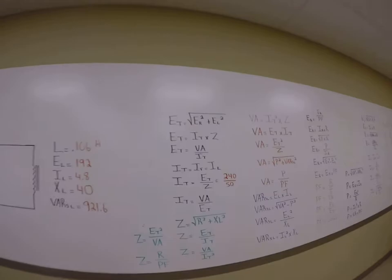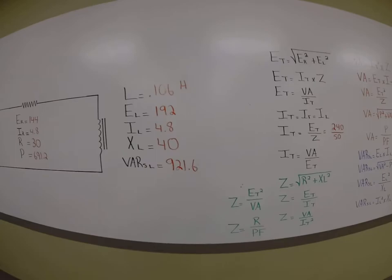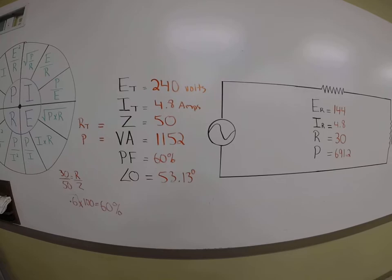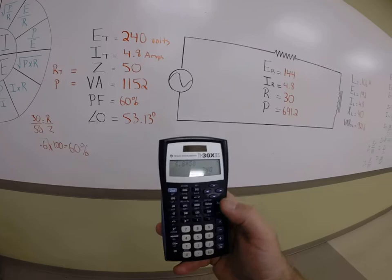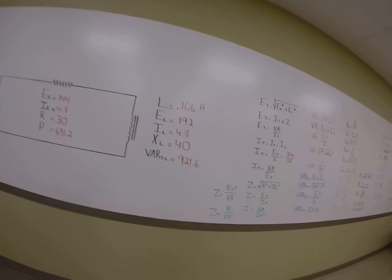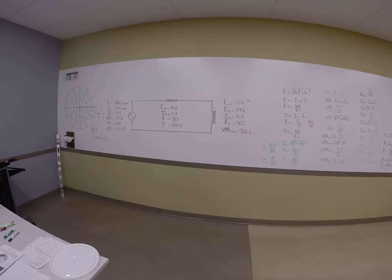If we want to, we could do the same thing with total current times impedance and we should end up with 240. So, our total current is 4.8 times our impedance, which is 50, and we still get 240 volts. So, however you need to cross-reference yourself, your series rules still apply to a series resistive inductive circuit.